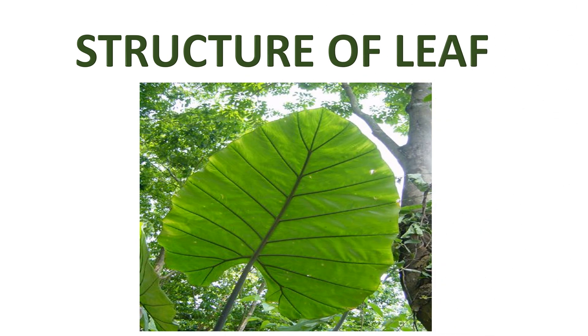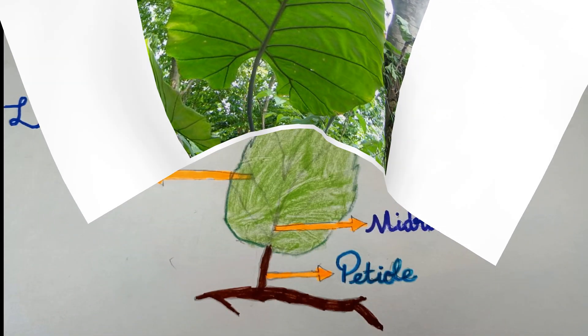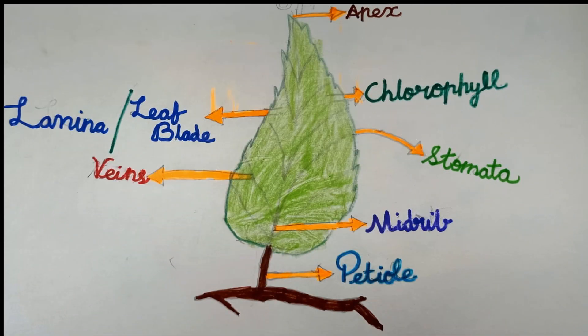Structure of leaf. The parts of the leaf are: Apex, which is the tip of the leaf.